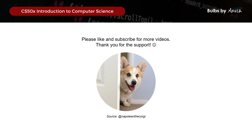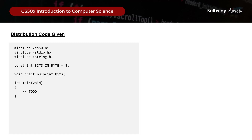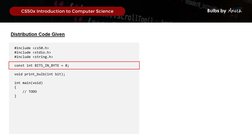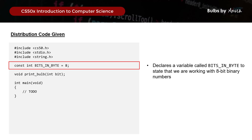Now that we understand how to convert text to binary, let's go through the distribution code. We have a variable called bitsInByte which equals 8, because we're working with 8-bit binary numbers, and we'll make reference to this later.